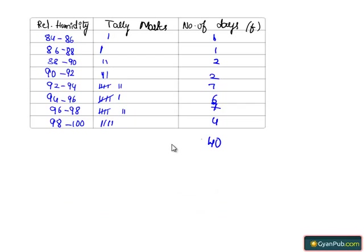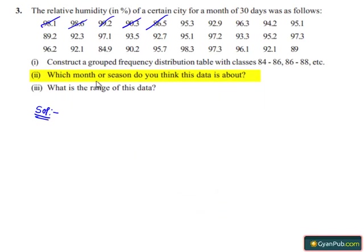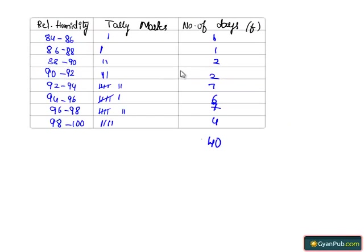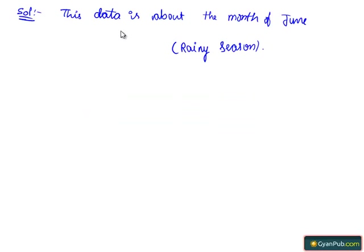Moving on to question number 2: which month or season do you think this data is about? Seeing the table, we find that this data is about the month of June — it is the rainy season. Hence, we write this data is about the month of June, rainy season, as they have given the relative humidity in percentage form.